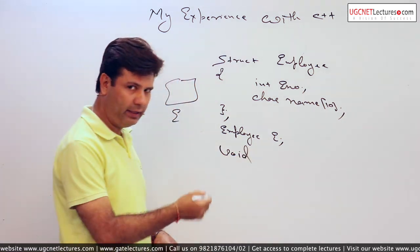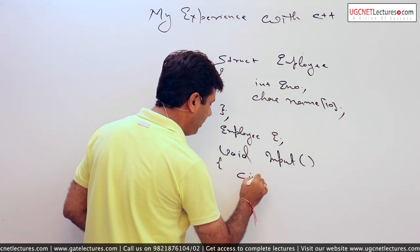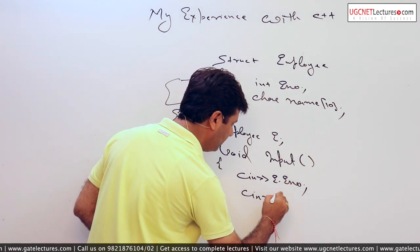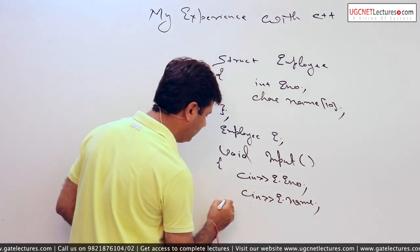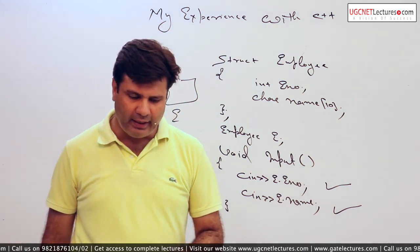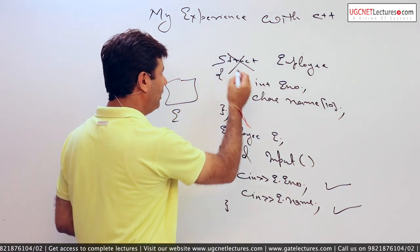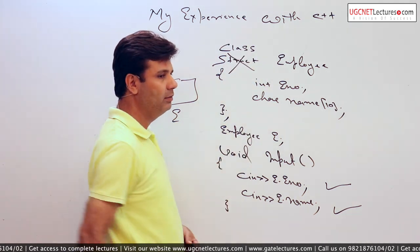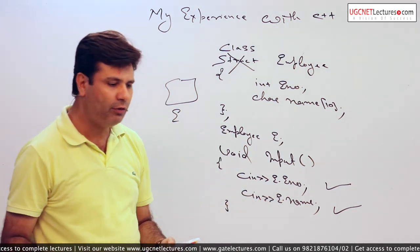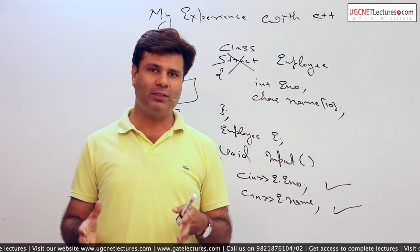I define one function called input. If I write cin with E dot employee_number and cin with E dot name, this is absolutely correct in case of C. But if I make a minor change — if I replace the struct keyword with the keyword class — the moment I write class, object-oriented programming is implemented. In object-oriented, the first and major concept is the security of data, which is not available in C.